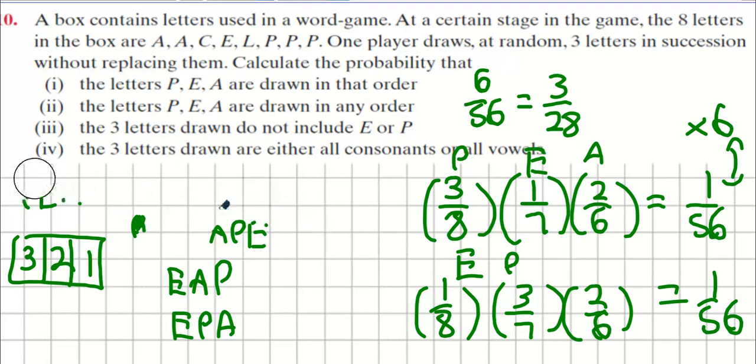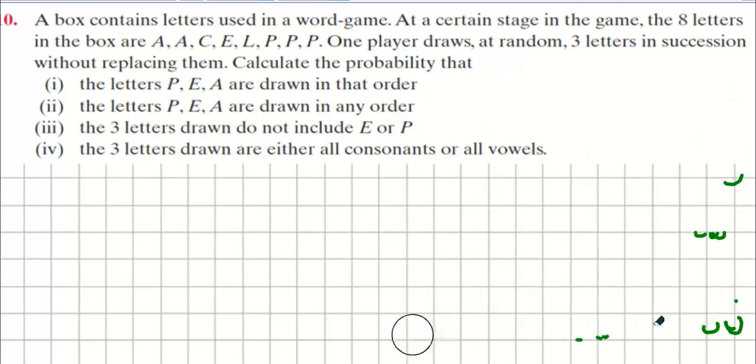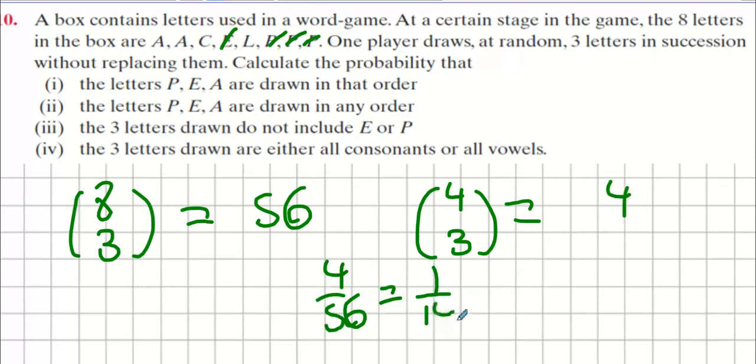Next question. Three letters drawn do not include E or P. It doesn't say anything about the order. The order doesn't seem to matter for this one. So how many ways can we draw the letters again? We can draw them eight choose three. That's 56 different ways. This means A, P, E would be the same thing. They're the same thing, they're considered one, not considered two. Now let's remove E and P from the equation. How many E's and P's are there? Four. Let's remove all four of them. What's left over? Four choose three. And what's four choose three? Four. So it's going to be four out of 56, which is one out of 14.